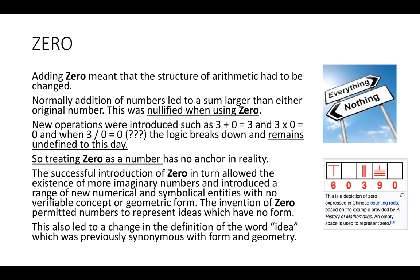Up until then, adding numbers together gave you a sum larger than the original number. But when zero was introduced, this all fell apart. Now you can add two numbers together and they don't get larger — they stay the same, such as three plus zero equals three, or three times zero equals zero. And then you get the horrible problem when three is divided by zero, where logic breaks down, and this is still a problem in mathematics to this very day.